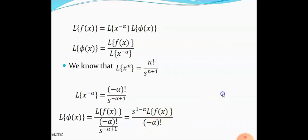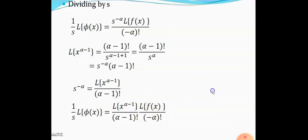We know that the Laplace of x raised to n is n factorial divided by s raised to n plus 1. So the Laplace of x raised to minus alpha is (minus alpha) factorial divided by s raised to (minus alpha plus 1). Substituting into our equation: Laplace of phi(x) equals Laplace of f(x) divided by (minus alpha factorial divided by s raised to minus alpha plus 1), which equals s raised to (1 minus alpha) into Laplace of f(x) divided by (minus alpha) factorial.